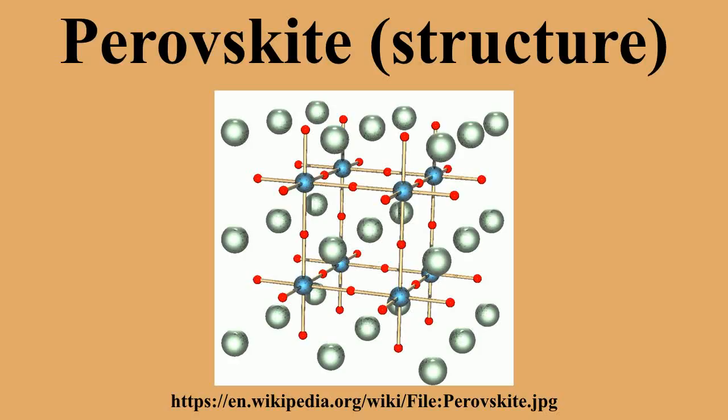This article is about synthetic compounds. For the mineral calcium perovskite, a perovskite is any material with the same type of crystal structure as calcium titanium oxide, known as the perovskite structure, with formula XII A2+ VIB4+ X2-3 with oxygen in the face centers. Perovskites take the name from the mineral, first discovered in the Ural Mountains of Russia by Gustav Rose in 1839, and named after Russian mineralogist L.A. Perovsky. The general chemical formula for perovskite compounds is ABX3.